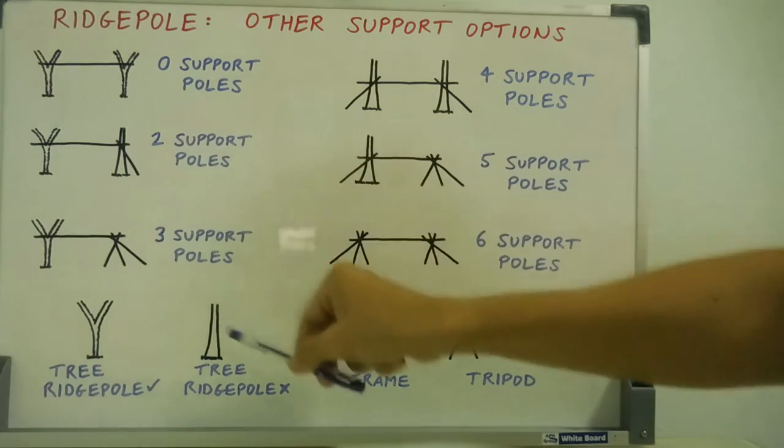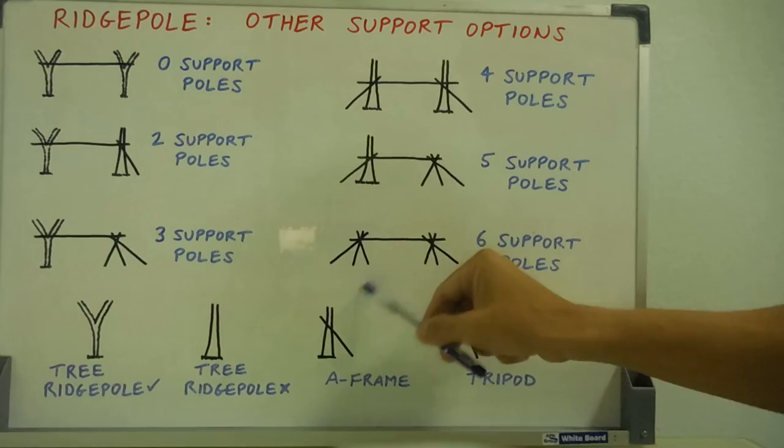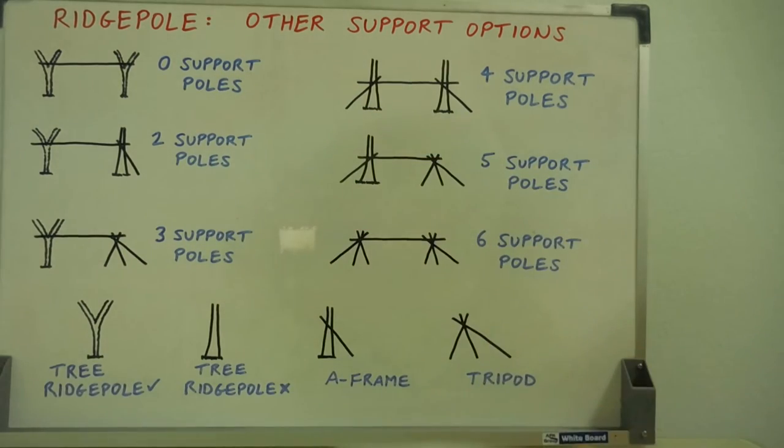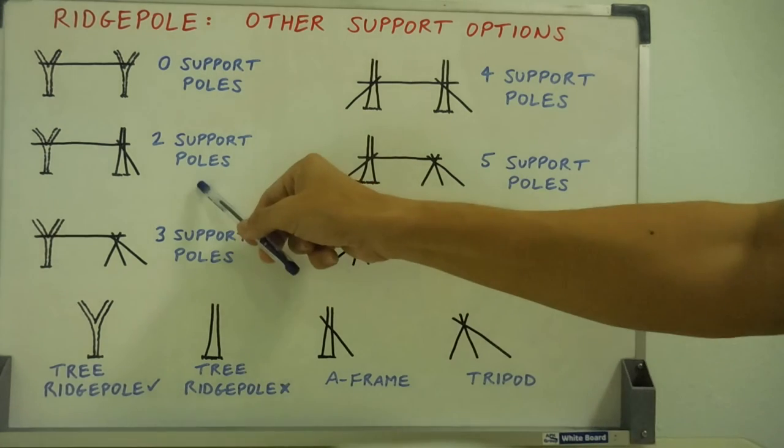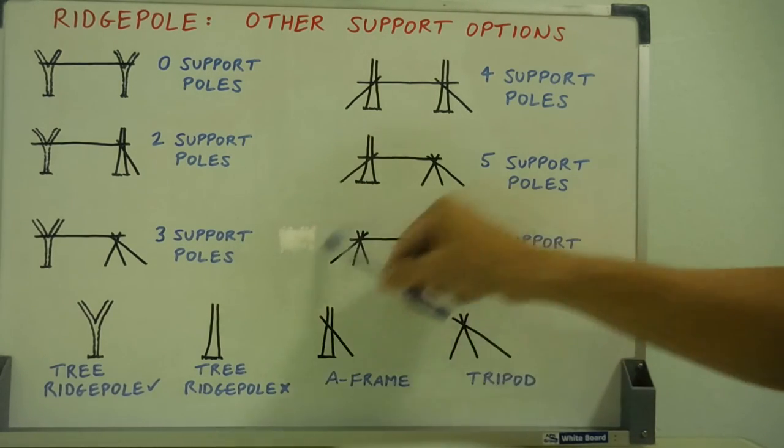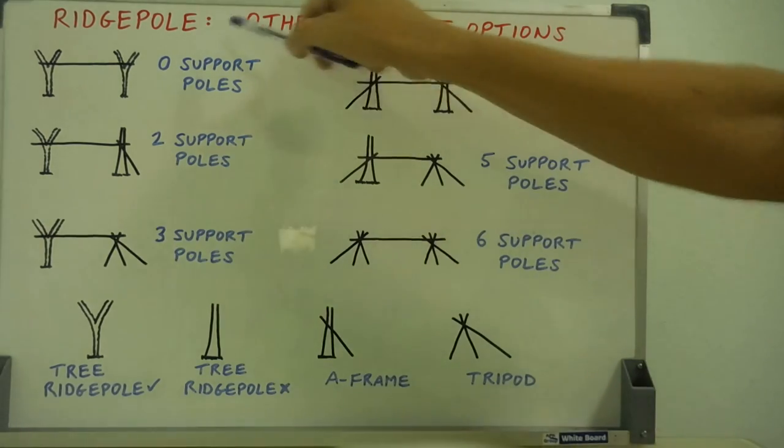A-frame up against a tree that can't support a ridge pole. Obviously a tripod, and everything in between. And obviously you want to save work, have as least work as possible to save energy and so forth. And you want the least number of support poles generally, unless you want to specifically build my full pen shelter, which is step five. So there's the other support options for a ridge pole.